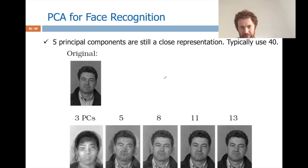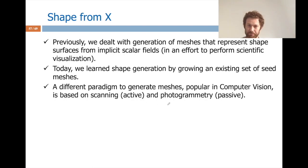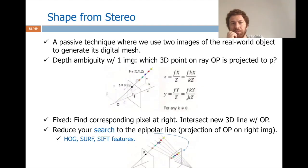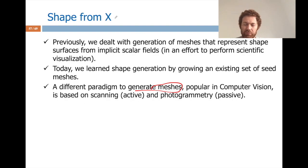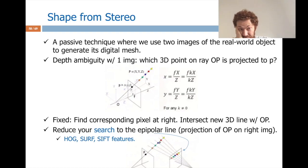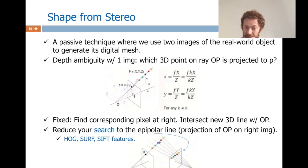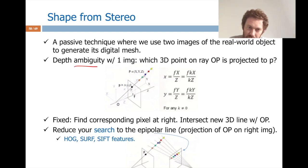Now a different paradigm to generate shapes: Shape from Stereo (photogrammetry). This is a passive method requiring two cameras and two images of a real-world object to generate its digital mesh. With one camera, a pixel P could correspond to any point along the ray OP — depth is ambiguous. Using a second camera, I project the OP ray onto it as an epipolar line. If I know the corresponding pixel on the second image, I send a ray from that camera's center, and the intersection of the two rays gives the 3D point.